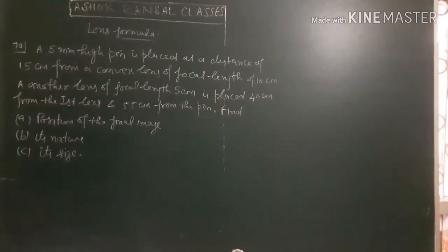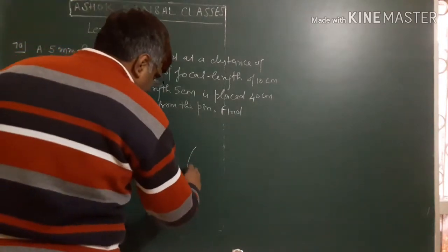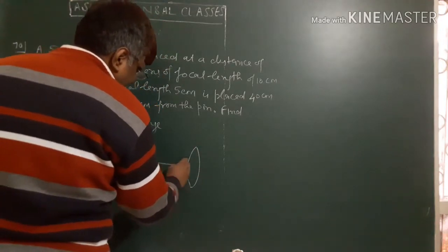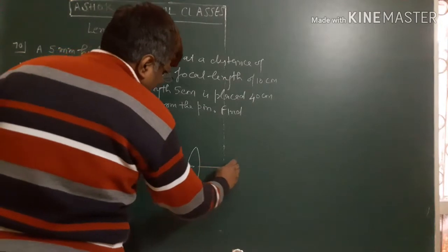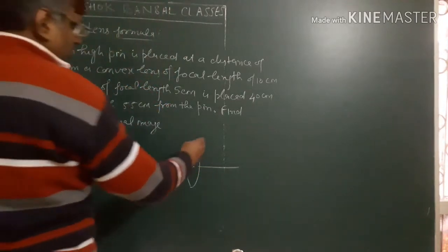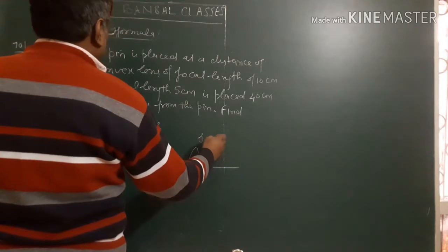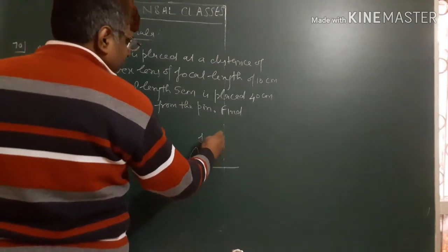Question number 70: A 5mm high pin is placed at a distance of 15cm from a convex lens. The focal length is 10cm.